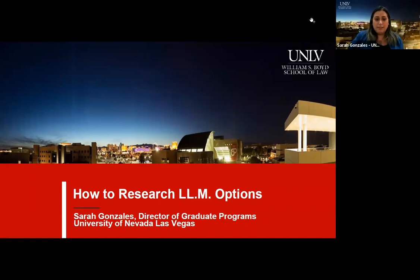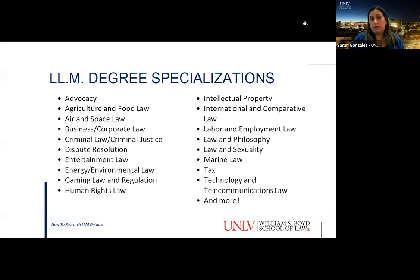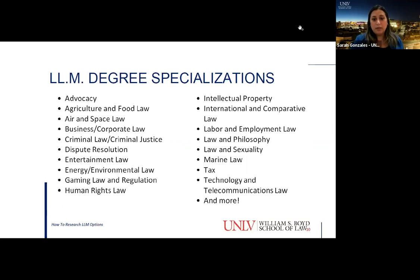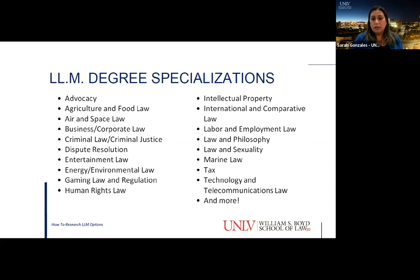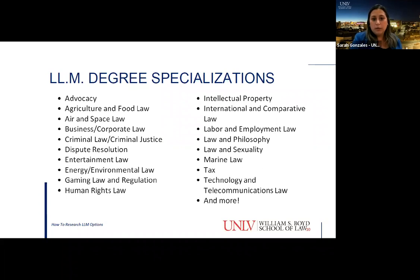Now that you get a lay of the land of the different program options available, the big question is how do you find the right one? I'm at UNLV, I'm Director of Graduate Programs. What you'll find is that there are a number of different specializations. There are over 200 ABA-accredited law schools, 176 of which offer an LLM. They vary from general to specialized topics — from popular topics like advocacy, entertainment law, and intellectual property, to very niche topics like agriculture and food law, energy and environmental law, and marine law.